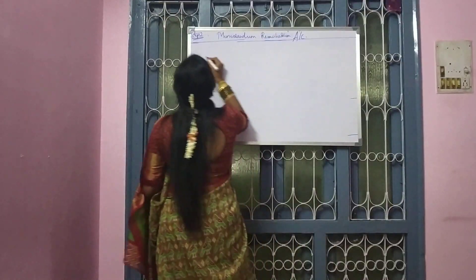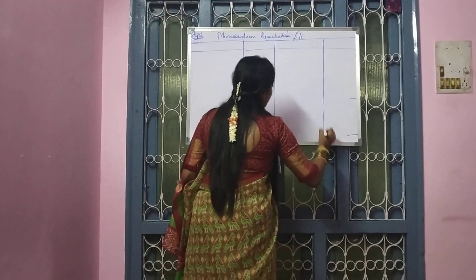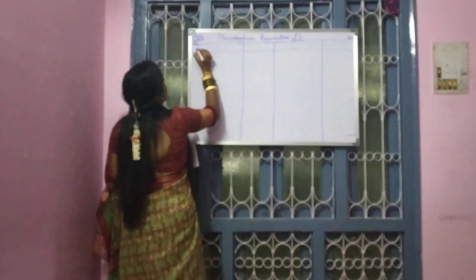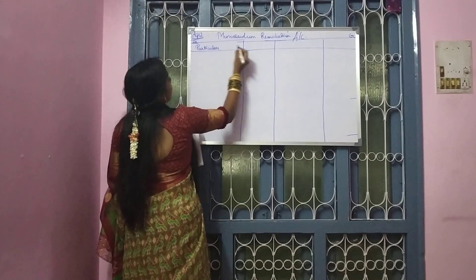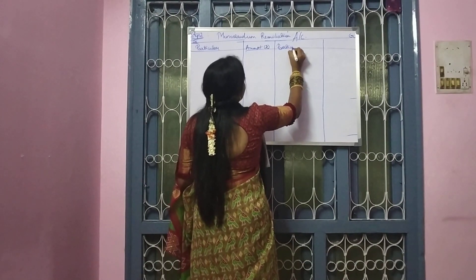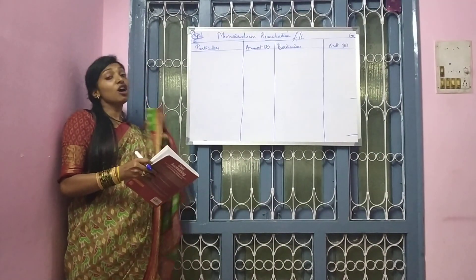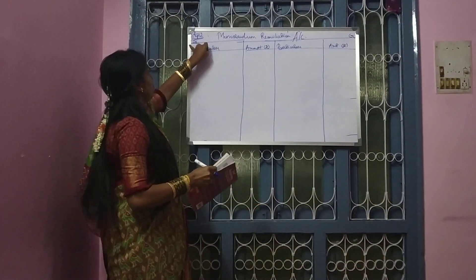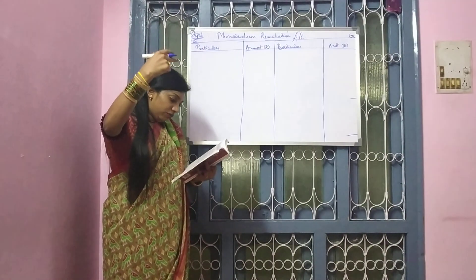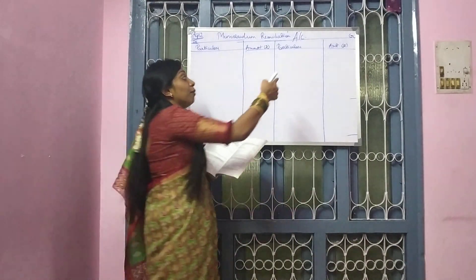As far as ledger accounts are concerned, you will have four columns — particulars and amount on each side. You will have two sides: debit side and credit side. Now just go to your second step. In the second step, whatever you have deducted or lessened, I am going to write it under the debit side. Whatever you have added, I am writing that under the credit side. Every debit transaction will start with the term 'to'; every credit transaction will start with the term 'by'.